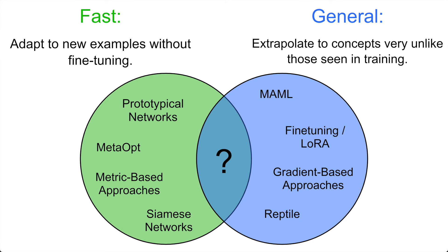On the other hand, we have slower approaches that are much more general. These approaches can extrapolate to new concepts unlike anything seen during training by backpropagating on the support set to learn the new classification paradigm. These are gradient-based approaches like MAML, or fine-tuning the model on the support set with LoRA, and so on.